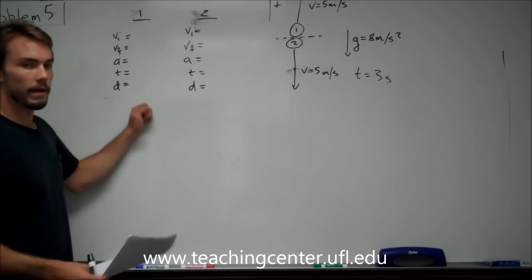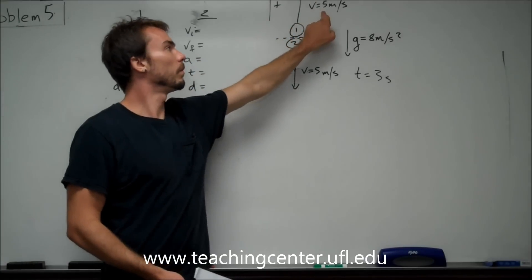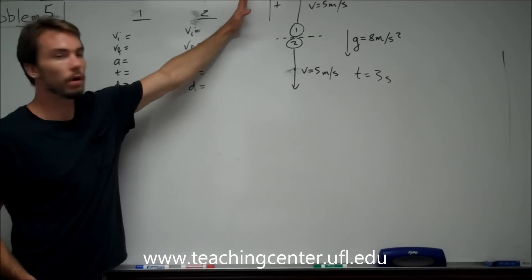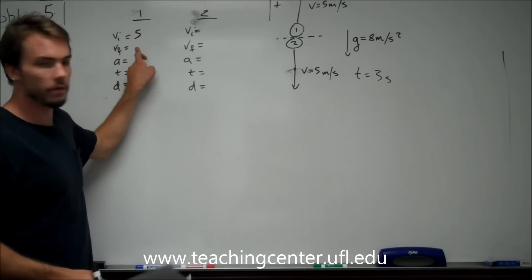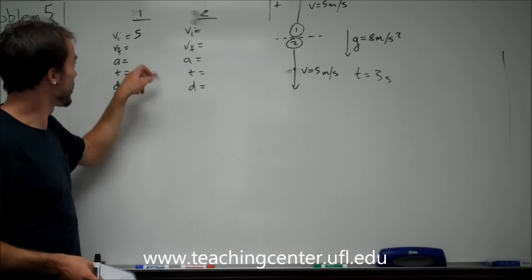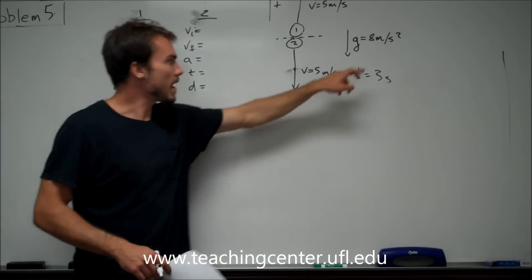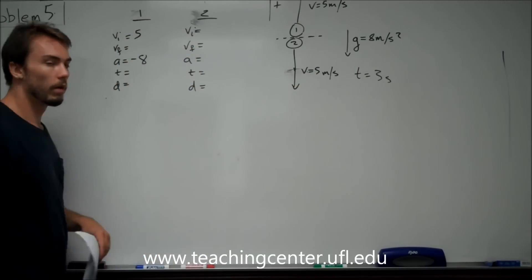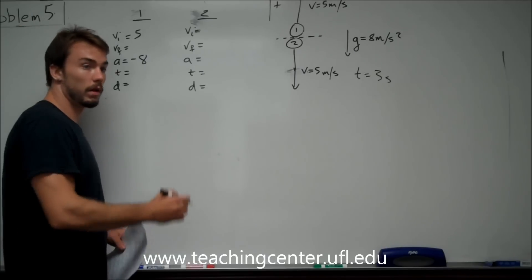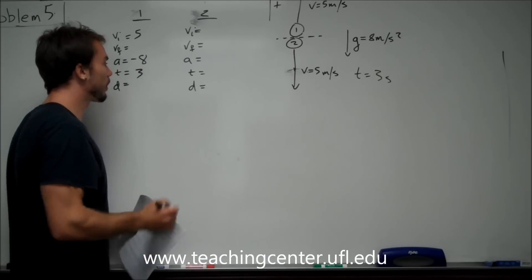So, that in mind, looking at the first ball, we know we have a velocity of 5 pointed upwards, so it's positive. We don't know the final velocity, and actually don't even care about the final velocity. We know we have an acceleration, 8, pointed downwards, so it's negative. We know we're looking at the point 3 seconds after when all this happens, and we're looking for a displacement.